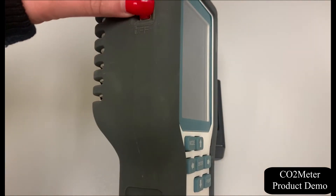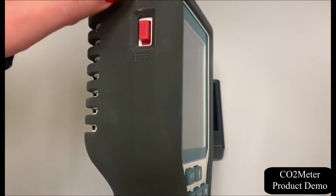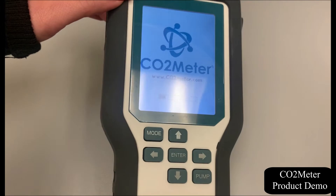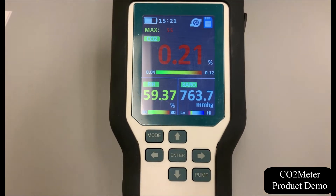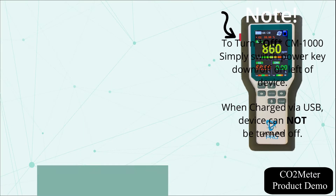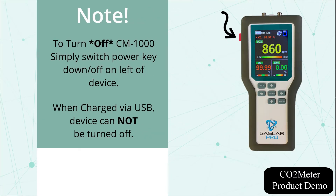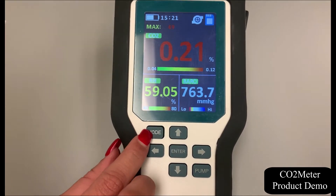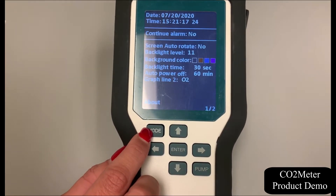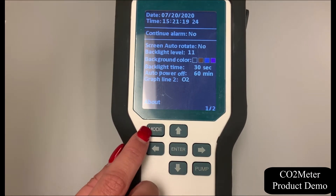To power on the device, we're going to start by simply switching the power key on the left of the device on. After the power is on, the device will start to measure and update the data every second. Before we get into the actual device, we're going to go ahead and hold the mode button to get into the settings screen.